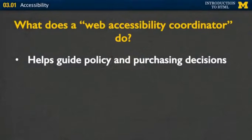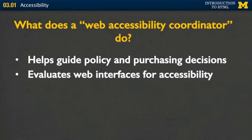First, one thing they might do is help guide policy and purchasing decisions on what kind of software is most accessible to the widest range of people. Second, they can evaluate web interfaces for accessibility. By learning just some key tips and tricks, they can go to different pages and find out where there might be pitfalls for people.